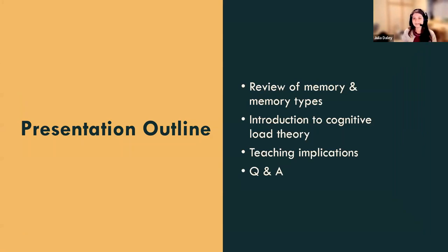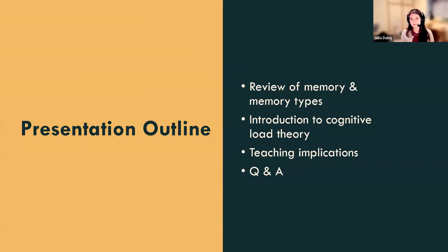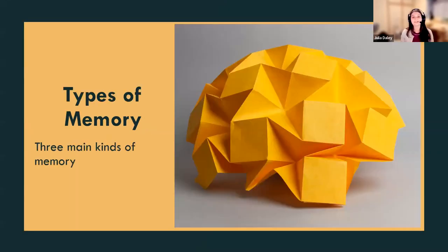Here is the goal of everything I want to talk about for today's presentation. First I'm going to go over and review memory and the three main types of memory. After that I will introduce cognitive load theory, which is the primary theory of learning. Finally we'll go into teaching implications, and my goal is to have at least 10 to 15 minutes left over for questions at the end. So if you do have questions, just hang on to them — there will be time at the end.